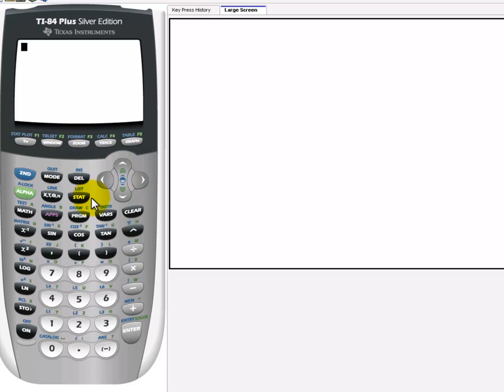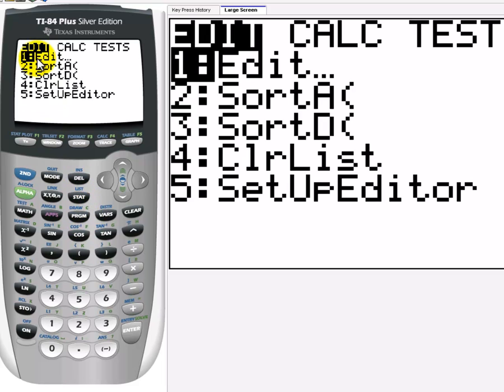To access your lists, we're going to use the STAT button. You can see on top of the STAT button, the second function is LIST. To actually make changes to our list, we're just going to push STAT. We have EDIT, CALC, and TEST across the top. We want to EDIT and that's going to be our list editor.